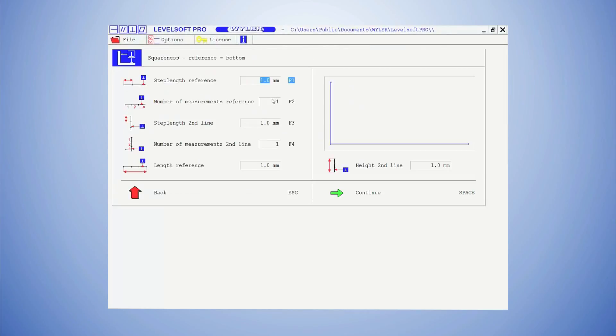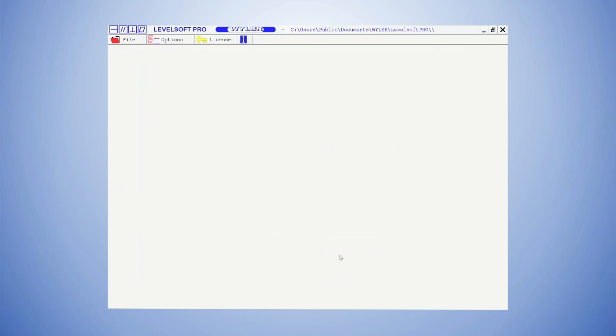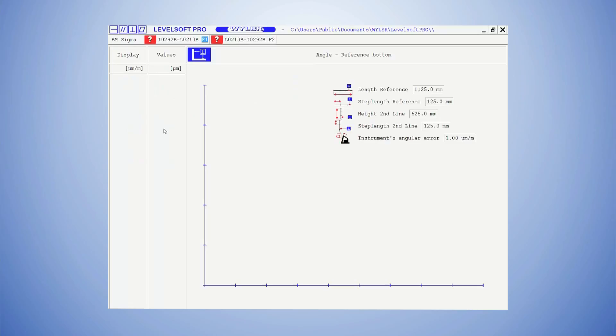Now we enter these values in Levelsoft. Since we have just determined the current angular error of our instrument, we enter this value here. Now we start with the actual measurement.